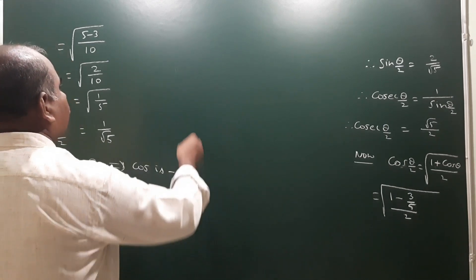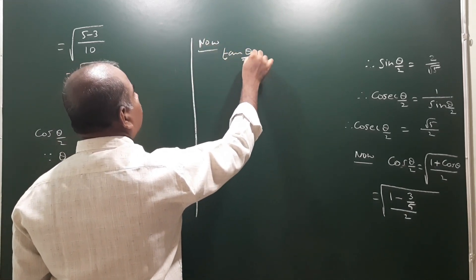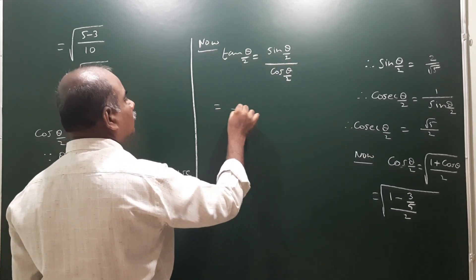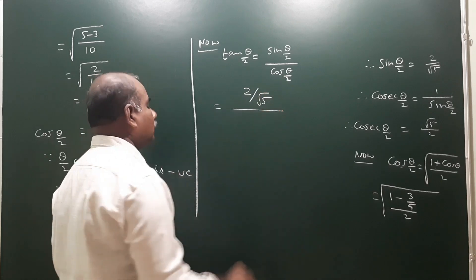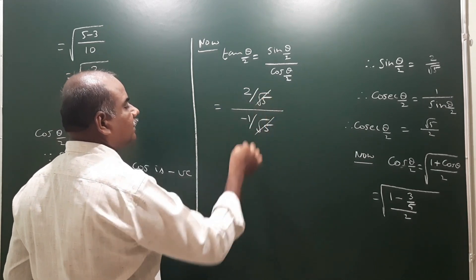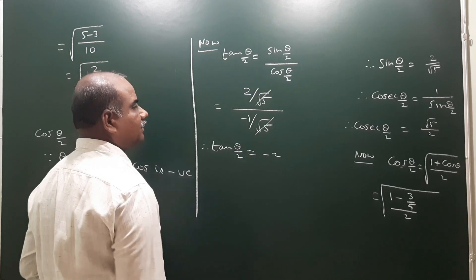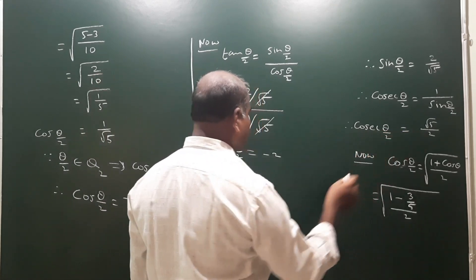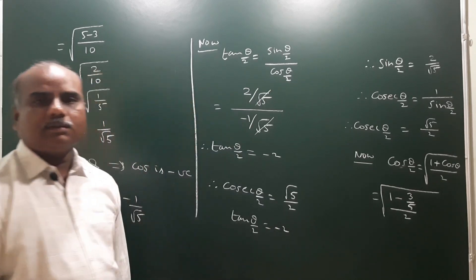Finally, tan(theta/2) equals sin(theta/2) divided by cos(theta/2). Substituting: (2 by root 5) divided by (minus 1 by root 5). The root 5 terms cancel, giving tan(theta/2) equals minus 2. Therefore, the final answers are cosec(theta/2) equals root 5 by 2, and tan(theta/2) equals minus 2.